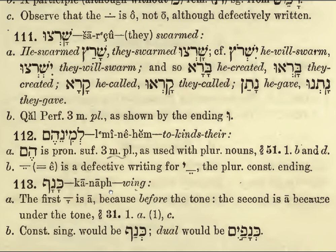And here the E is defective for writing with a vowel, which would be the plural construct ending. Canaf — the wing. The first vowel is before the tone and the second is because it's under the tone: Canaf. The construct singular would be Canaf, and the dual would be Canaf.